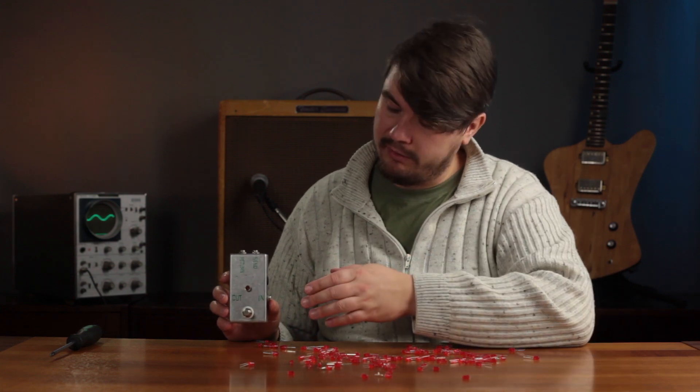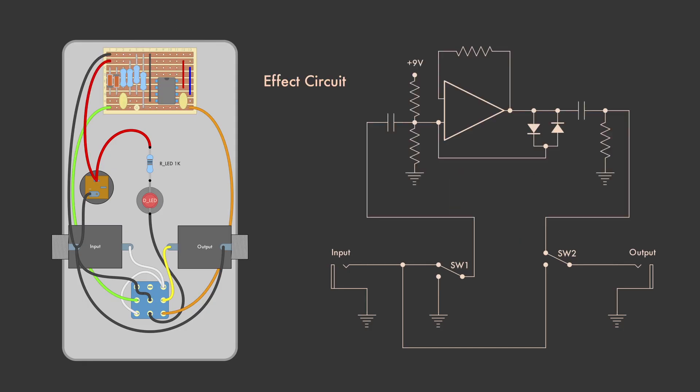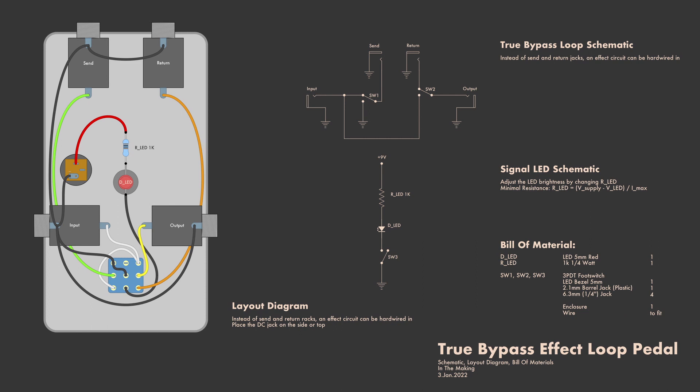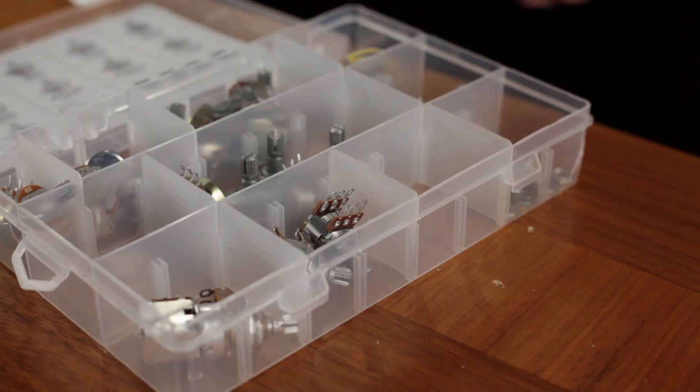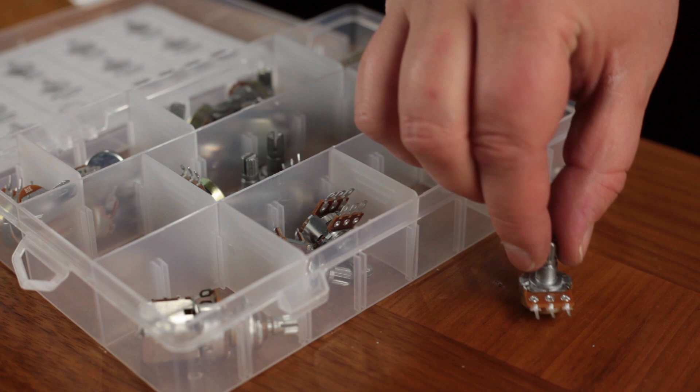That's it — we're done. The reason I started this series with the True Bypass effect circuit and the signal LED is because you could hardwire in any other effect circuit board. Just swap out the send and return jacks for the input and output of an effect circuit board. This schematic and layout diagram are going to be the framework for all effect pedals to come — the link is in the description. Next time we're going to do just that with the most basic effect: a passive volume knob, a perfect excuse to learn about potentiometers.